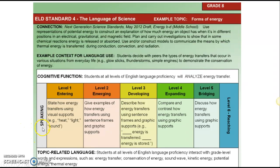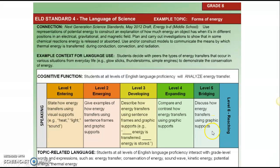A student who is a level one in speaking is going to be able to demonstrate their information by, for example, stating how energy transfers using some visual supports and pictures and that sort of thing. But a student who is at level five, which is almost the same level as a native English speaker, would be able to discuss how energy transfers and be able to use some graphic supports. So the way that they demonstrate their understanding of the content is going to differ based on the level of their English language ability.